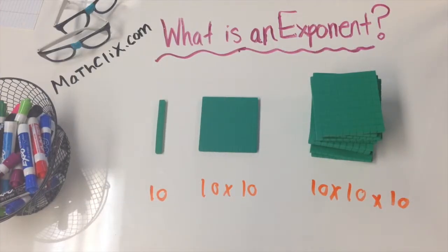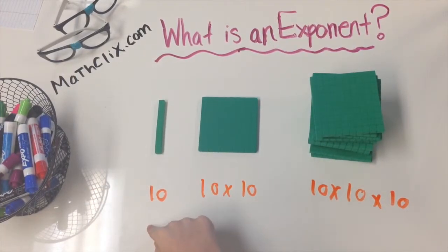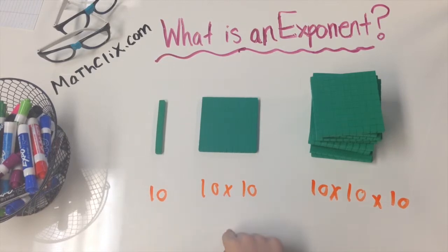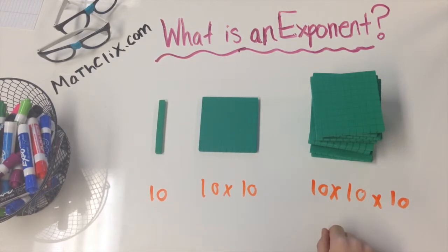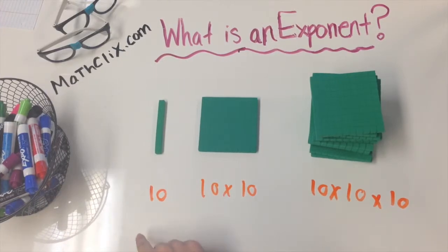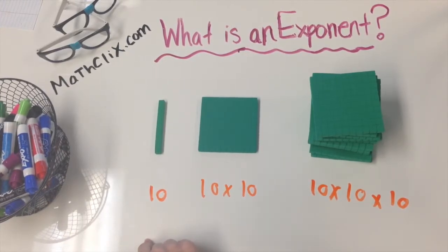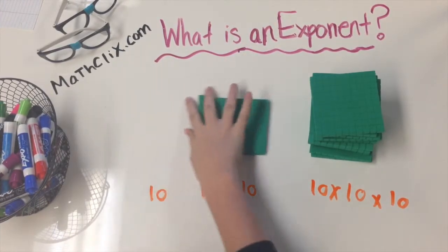That brings us to the need for an exponent. This exponent would be one, this exponent would be two, and this exponent would be three. So an exponent is just the number of times you multiply a number by itself.